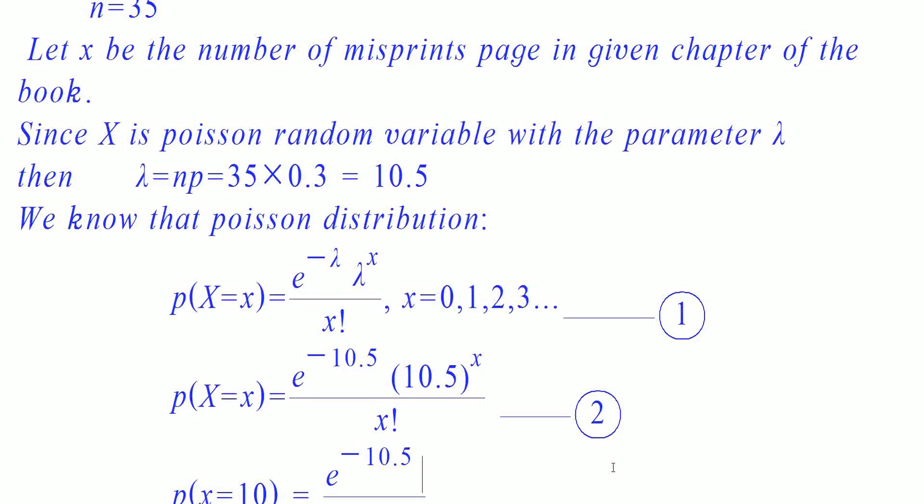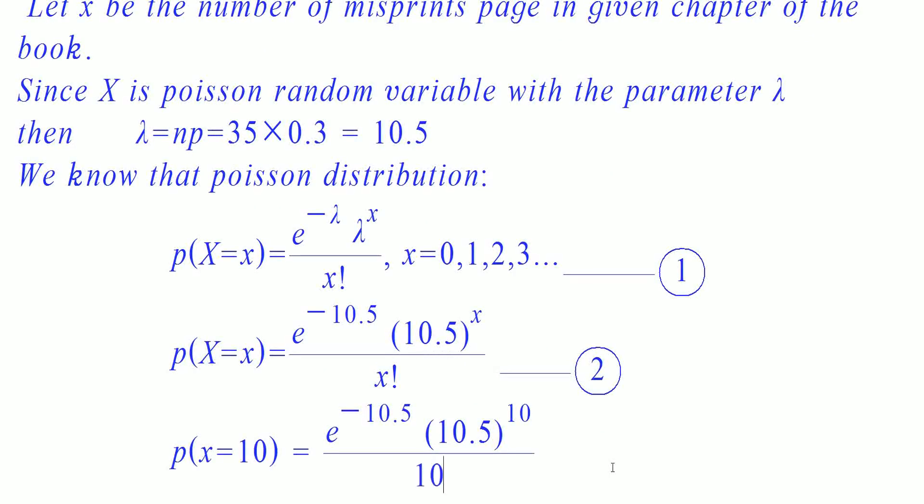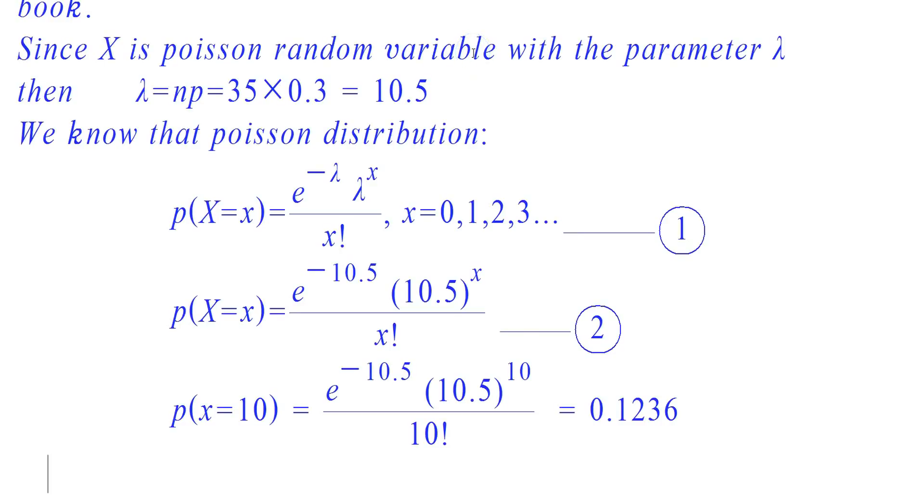Then probability of X is equal to 10 is equal to e raised to minus 10.5 into 10.5 whole raised to 10 by 10 factorial, which is equal to 0.1236.